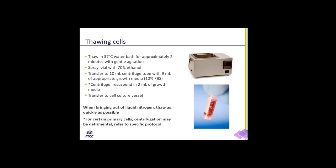After removing the vial from the bath, make sure to spray the vial down with ethanol to prevent contamination. Then transfer the contents to a sterile centrifuge tube with about nine mils of complete growth media, which should include about 10% FBS. When done, you can centrifuge down the tube, discard the supernatant, and then re-suspend in one to two mils of growth media to add to the desired plate. The main point is you always want to bring cells out of liquid nitrogen and thaw as quickly as possible. And for certain cells, like primary cells, centrifugation may be detrimental, so you want to avoid that step.